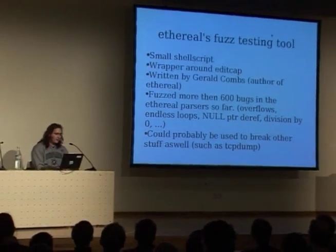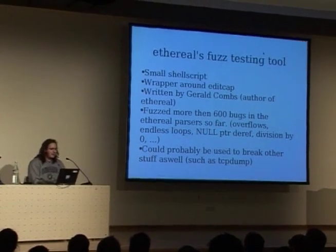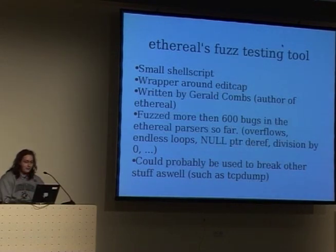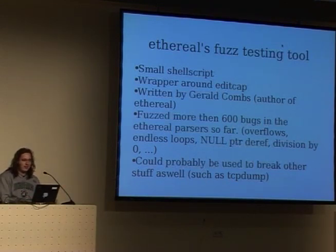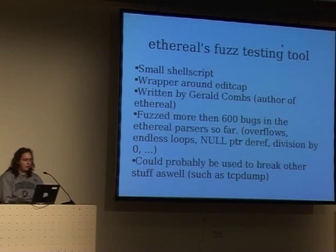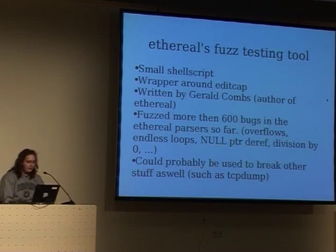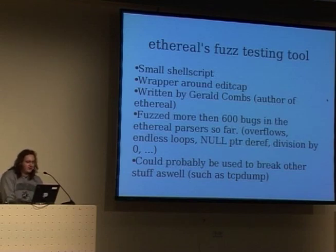Another really cool small fuzzer is what the guys from Atrial developed. Atrial was spitting out a lot of advisories — growing exponentially, from one or two in 2001 to like 50 issues in one advisory at the beginning of this year. What they did was make their own little fuzzing tool using EditCap — a tool they made — with a small shell script around it for statistics. It's written by the guy who made Ethereal. Today, they've fuzzed more than 600 bugs in Ethereal — overflows, endless loops, null pointer references, division by zero, and a lot of other things.